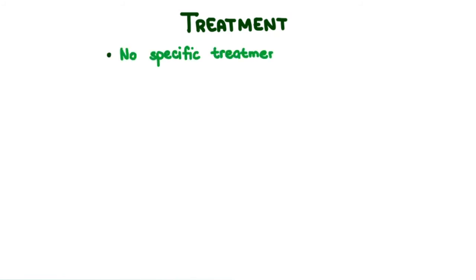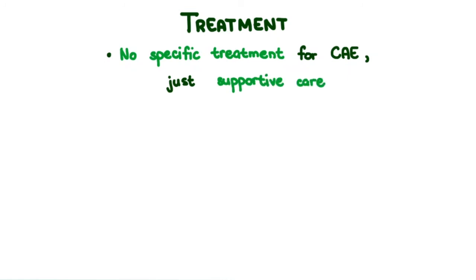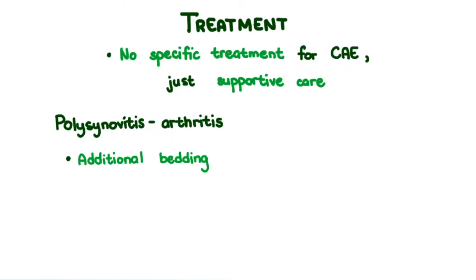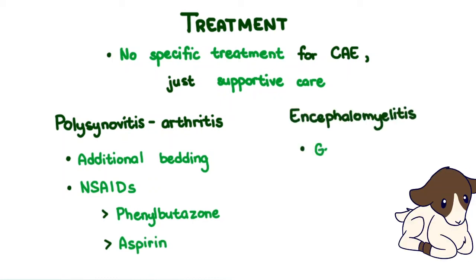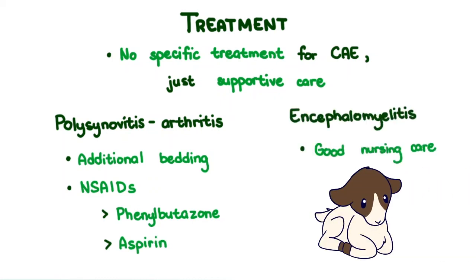Treatment: There is no specific treatment for caprine arthritis encephalitis — just supportive care. For polysynovitis arthritis, additional bedding may be provided and NSAIDs such as phenylbutazone and aspirin may be given. For encephalomyelitis, good nursing care should be provided.